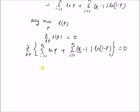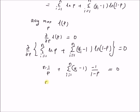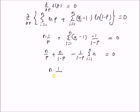The first term equals n times (1/p), since the derivative of log(p) is 1/p and there are n terms. The second term gives the summation of (x_i minus 1), which is independent of p, times the derivative of log(1 minus p), which is minus 1/(1 minus p). Rewriting these terms: n/p minus n/(1 minus p) minus (1/(1 minus p)) times the summation of x_i equals zero. This simplifies to n times 1/(p(1 minus p)) equals (1/(1 minus p)) times the summation of x_i.